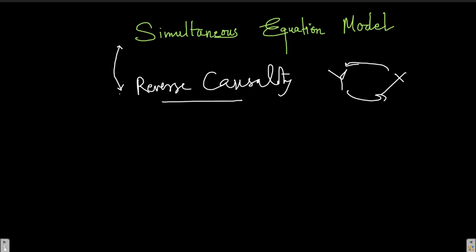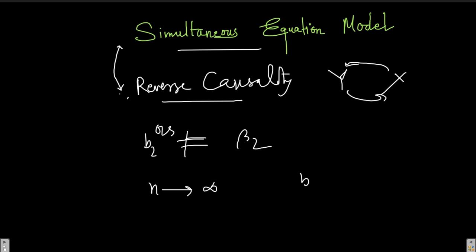We will see that with instrumental variables we can actually avoid this kind of circularity. Reverse causality is something that will often be present in a simultaneous equation model, and we are going to see what a simultaneous equation model is and how reverse causality is present. When we have reverse causality, we will have a B2OLS which is a biased estimator of beta 2. The other problem is inconsistency — meaning when n tends to infinity, B2OLS is not going to converge to beta 2.